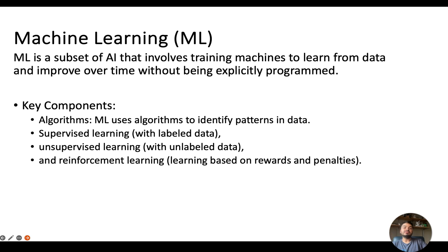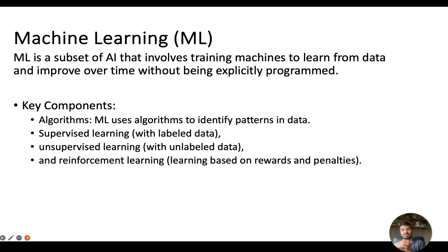But how does ML actually work? It uses something called an algorithm to identify patterns within the data. An algorithm is nothing but step-by-step instructions that help machine learning to learn and make decisions. There are three main types of machine learning: supervised learning, unsupervised learning, and reinforcement learning.